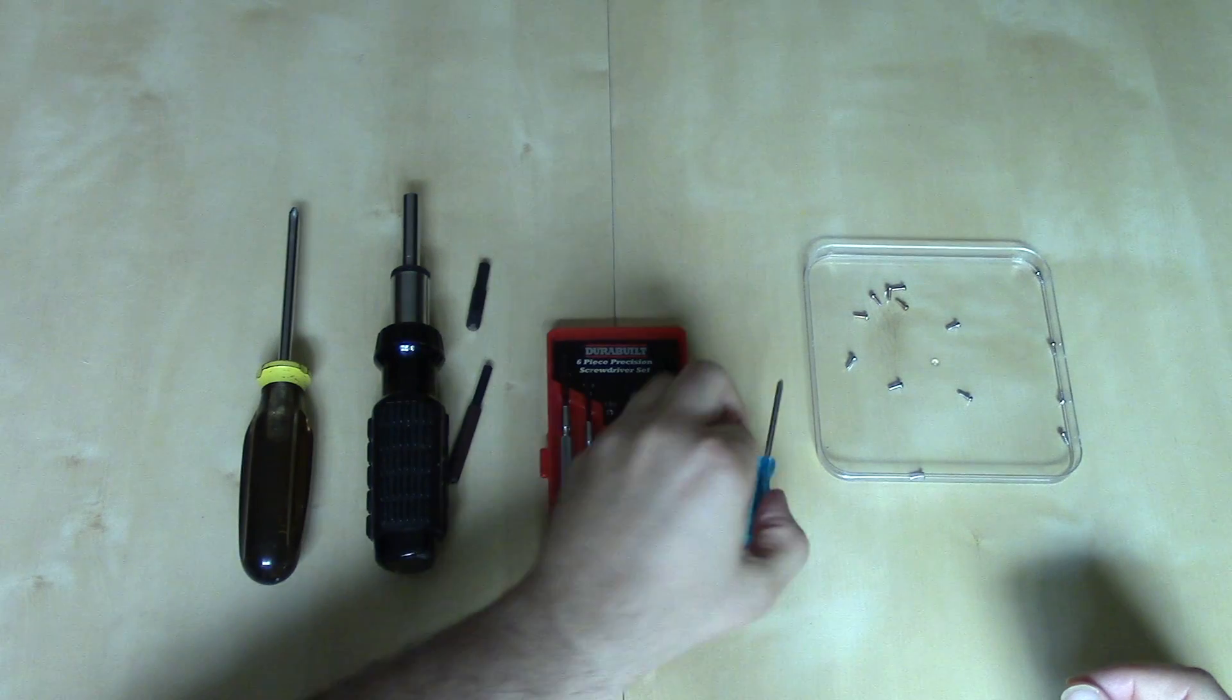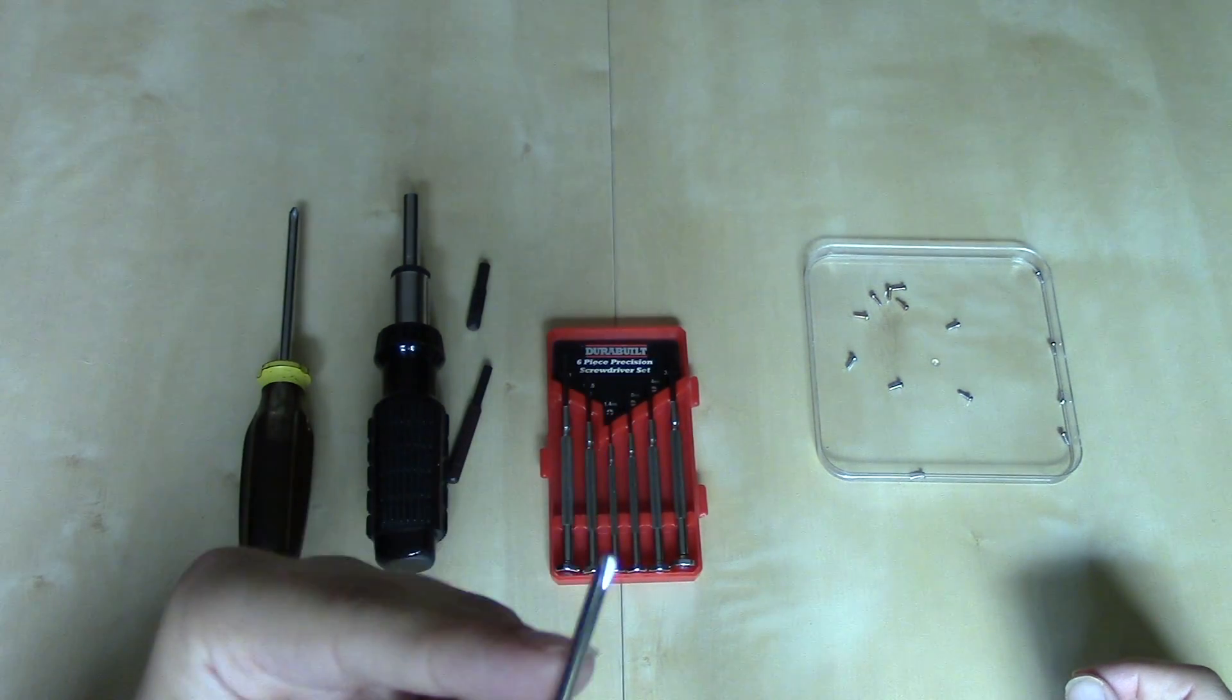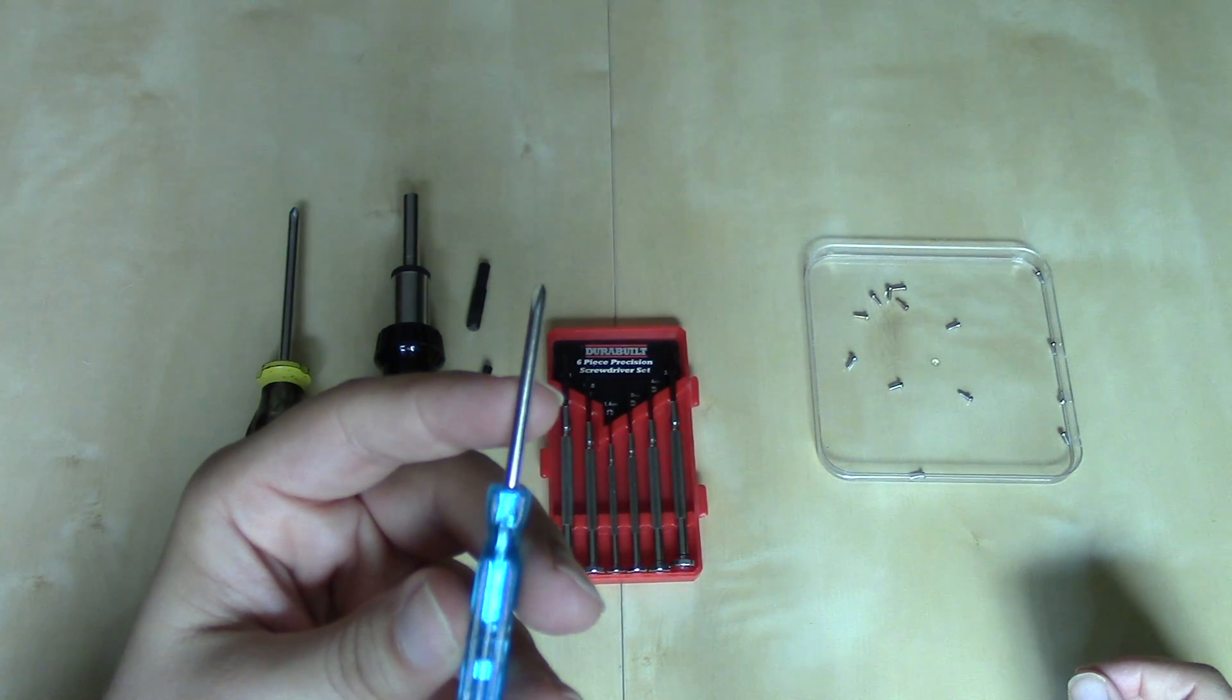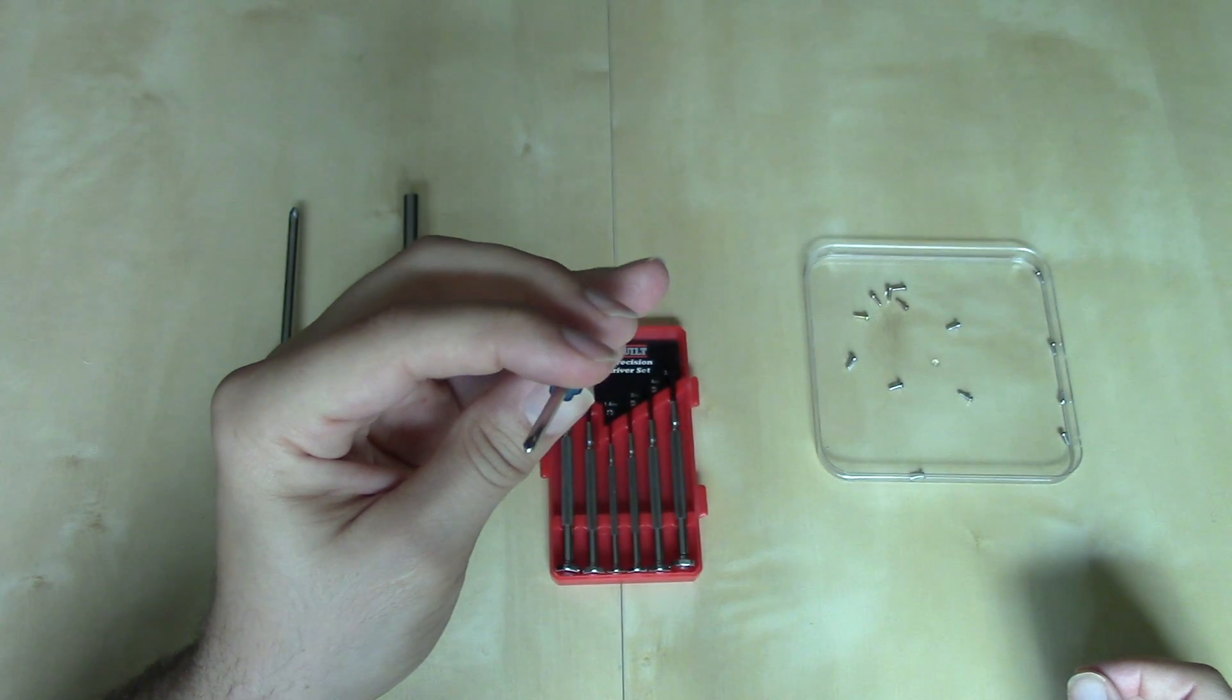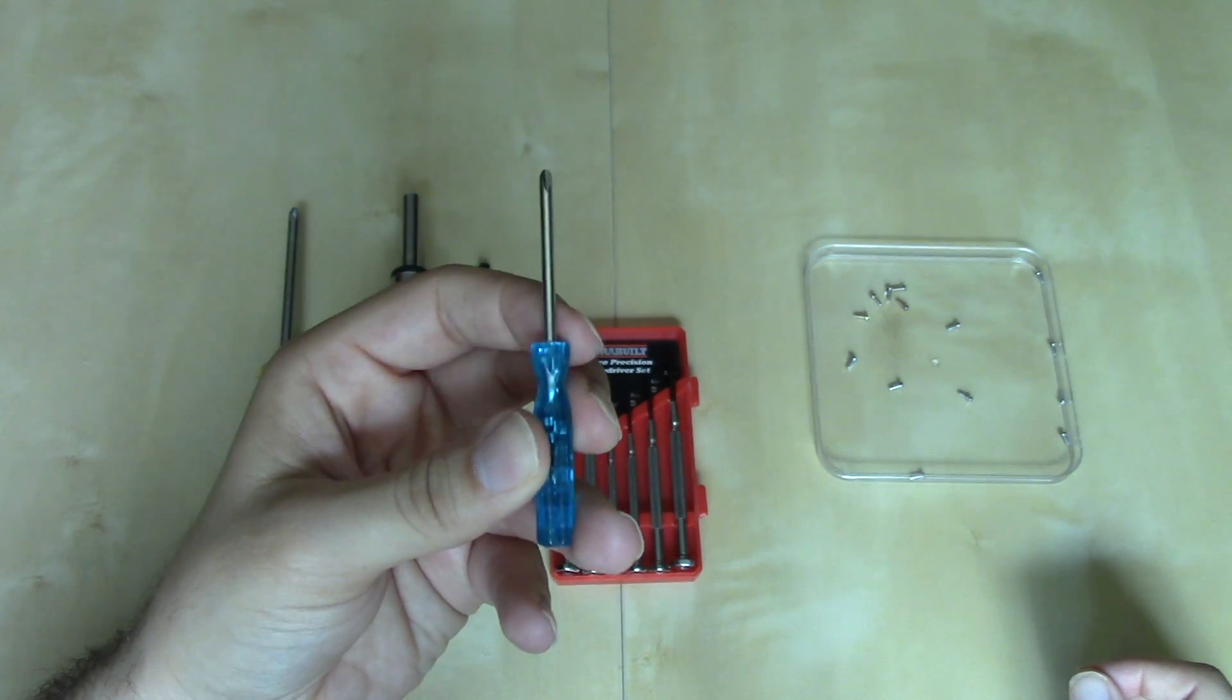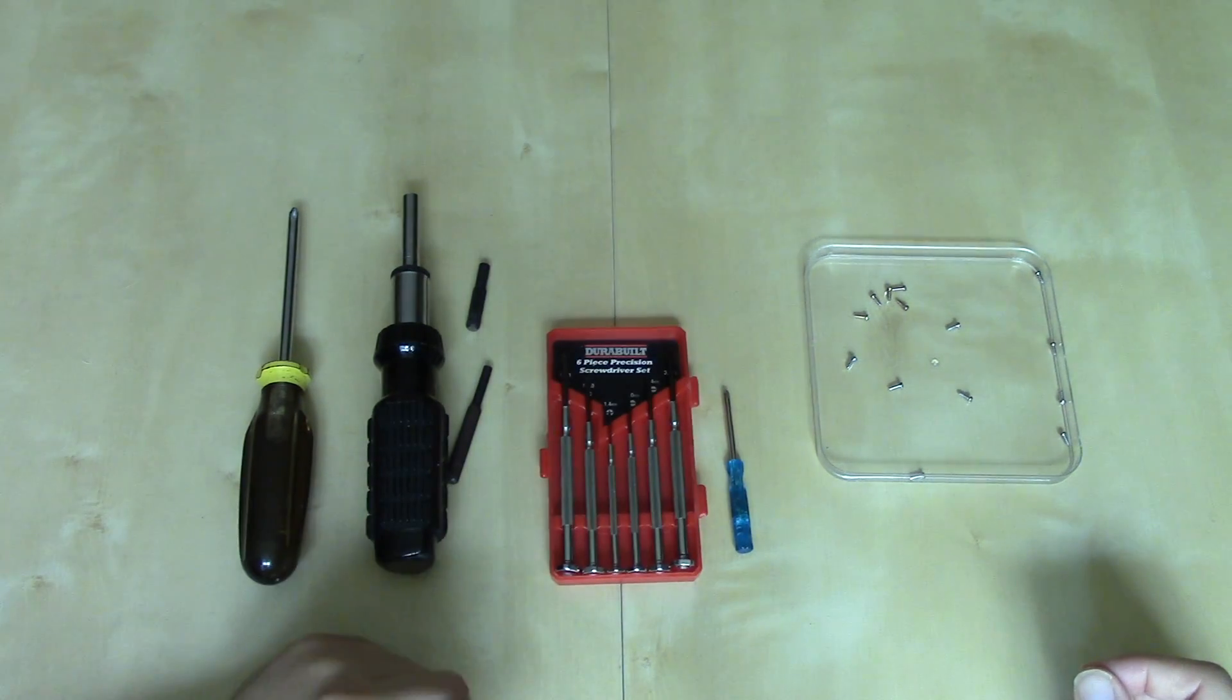Nintendo's more recent consoles, starting with the GameCube controller, they started using tri-wing screws. Tri-wing screws look a lot like Phillips screws, but they're only able to be taken out with this unique screwdriver called a tri-wing. And again, that's something you can find on Amazon or eBay.